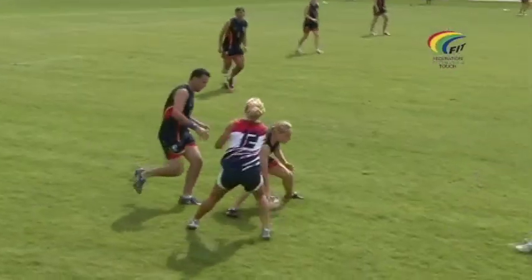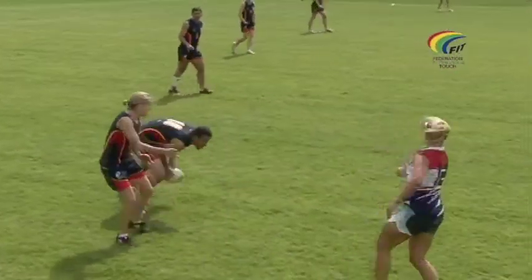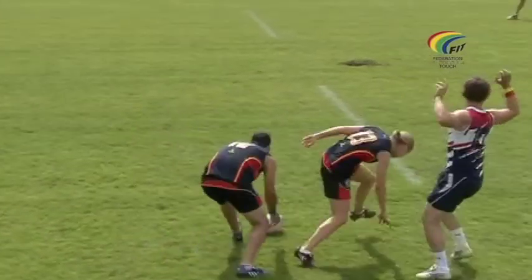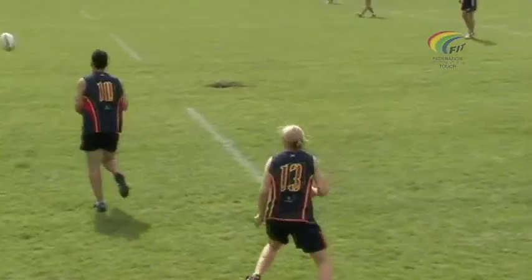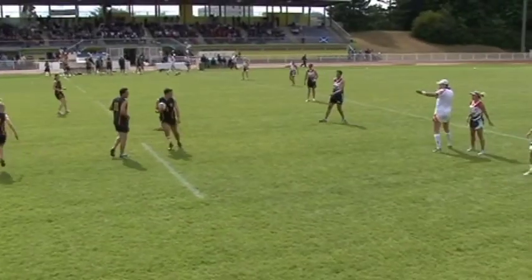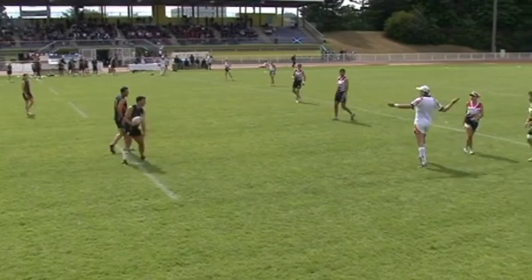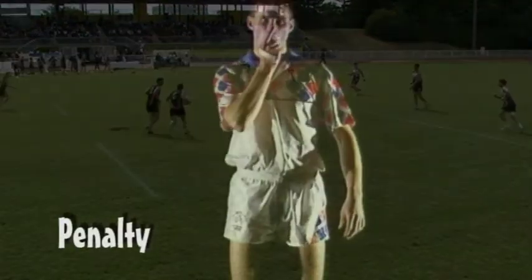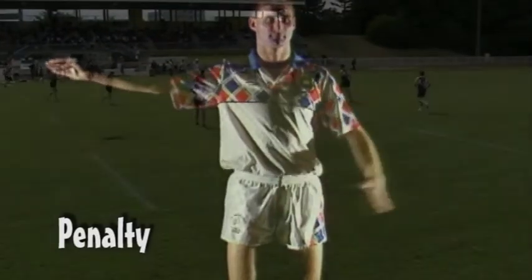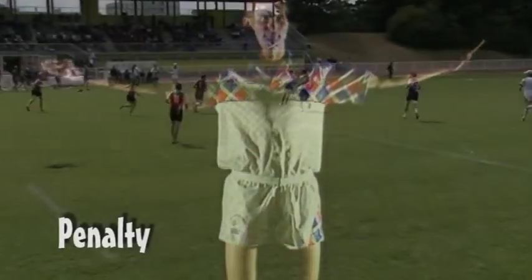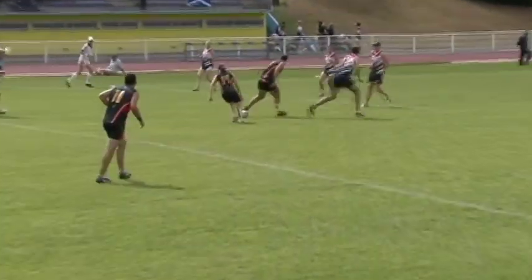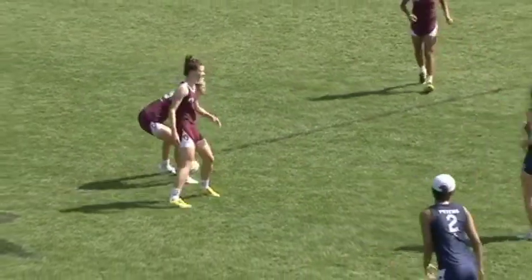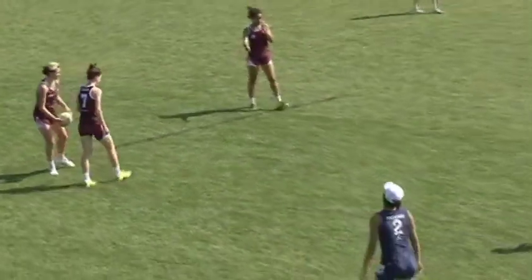Although touch is a simple game, penalties may be awarded by the referee if players don't observe the playing rules. If the referee sees an infringement, the referee will blow the whistle and award a penalty. After blowing the whistle, the referee will use a hand signal to indicate the infringement and call out what the infringement was.